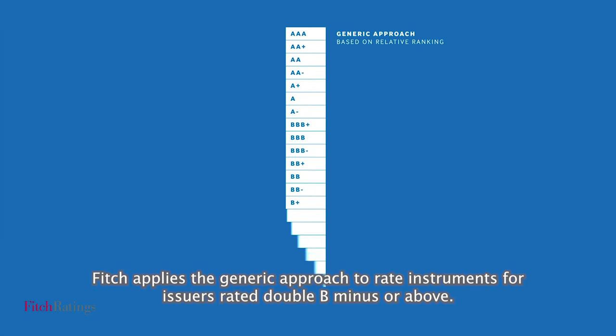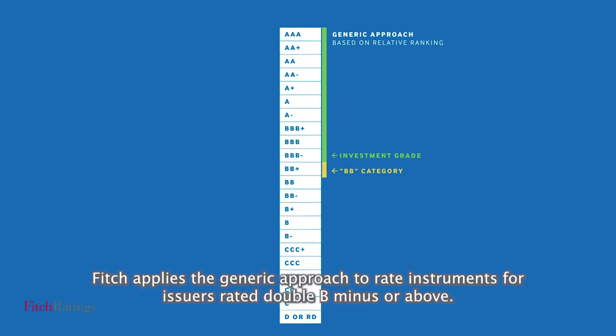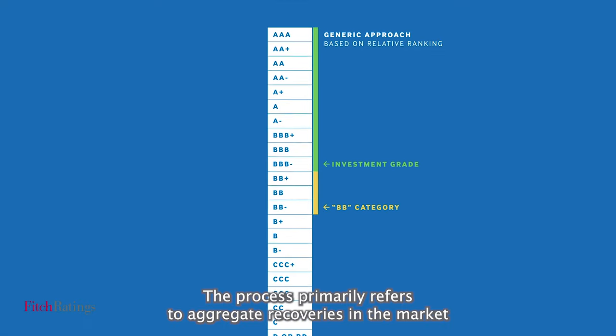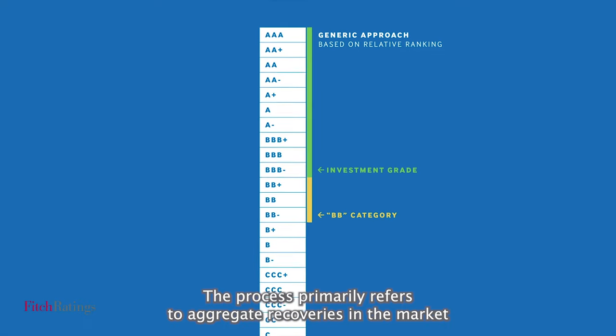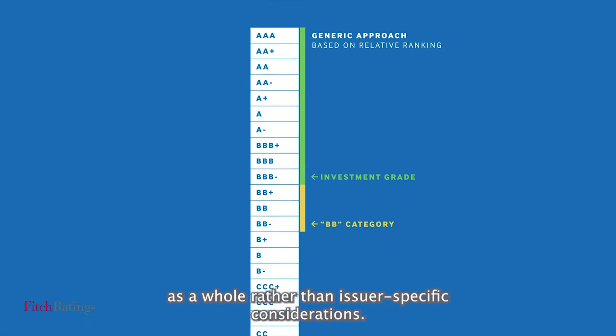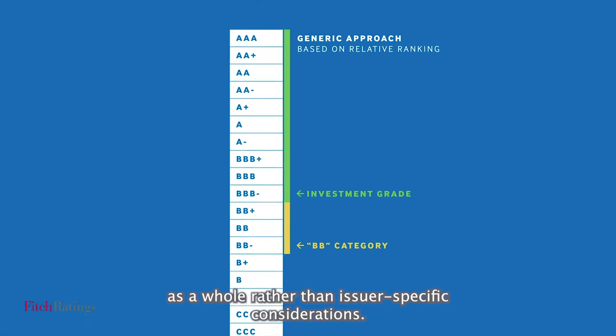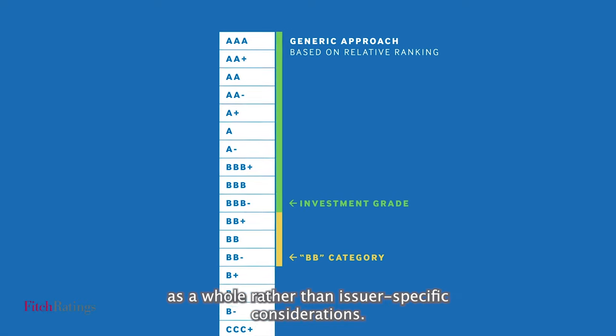Fitch applies a generic approach to rate instruments for issuers rated BB-minus or above. The process primarily refers to aggregate recoveries in the market as a whole rather than issuer-specific considerations.